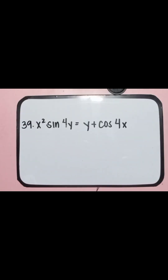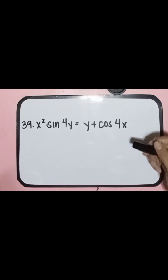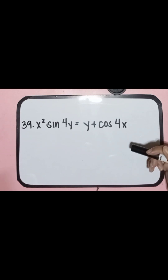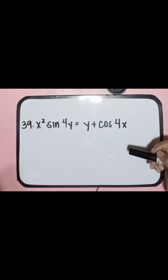x squared sine 4y equals y plus cosine 4x. In order to differentiate this equation, we have to know first the rule that needs to be applied. In this problem, we are going to use the product rule, which is u dv plus v du.